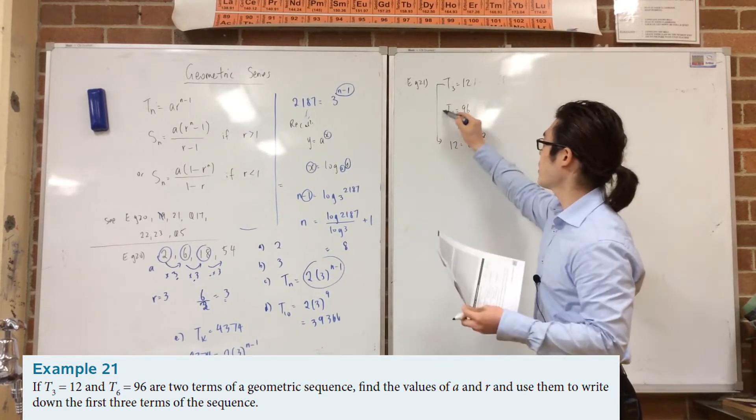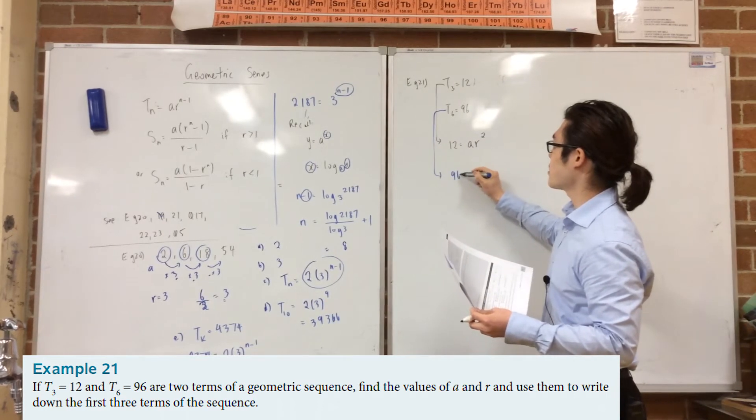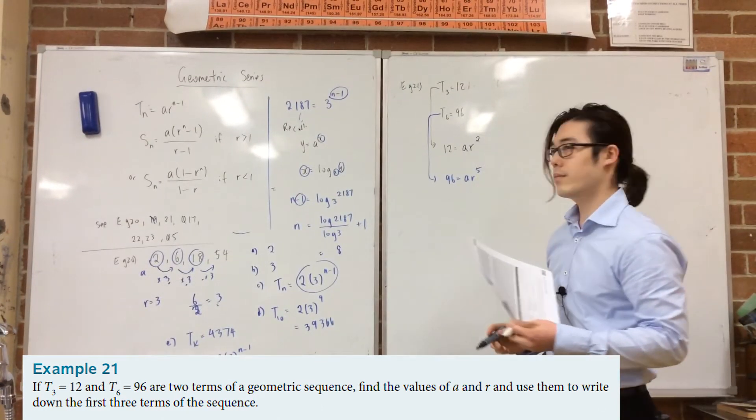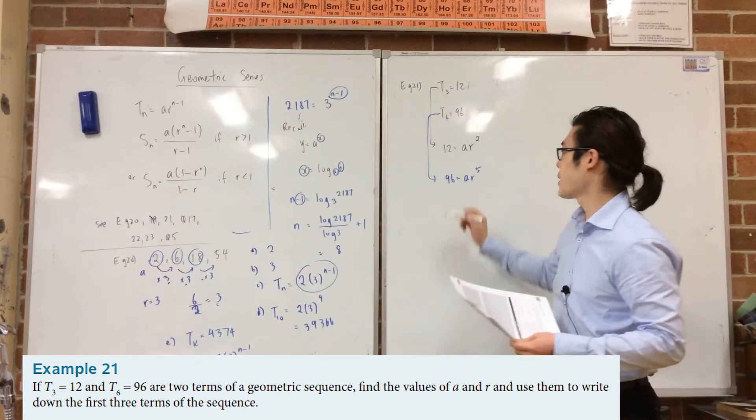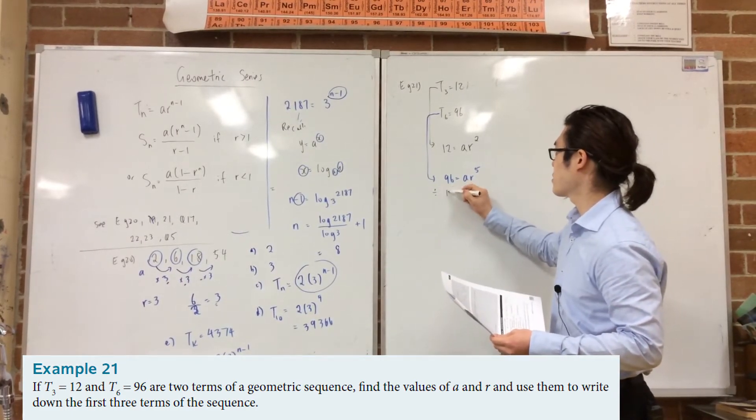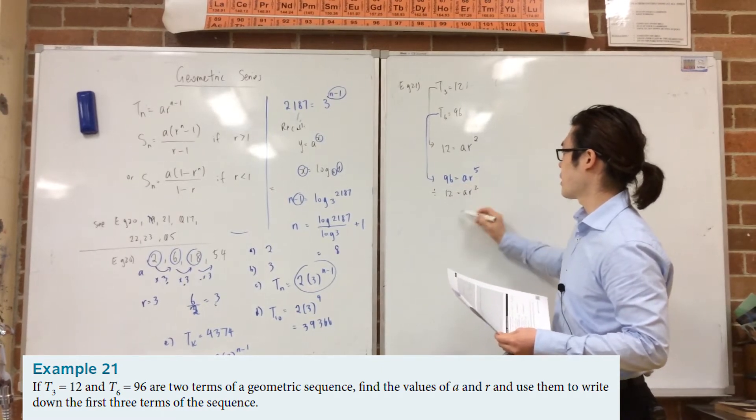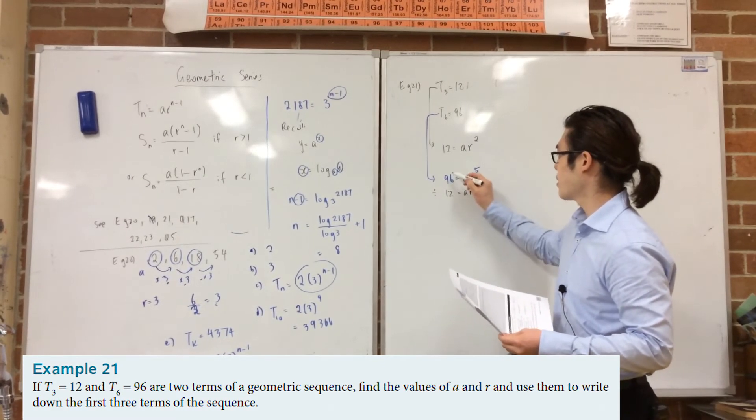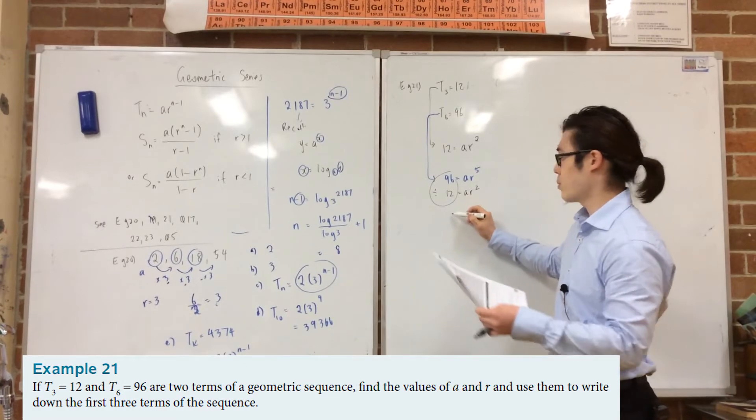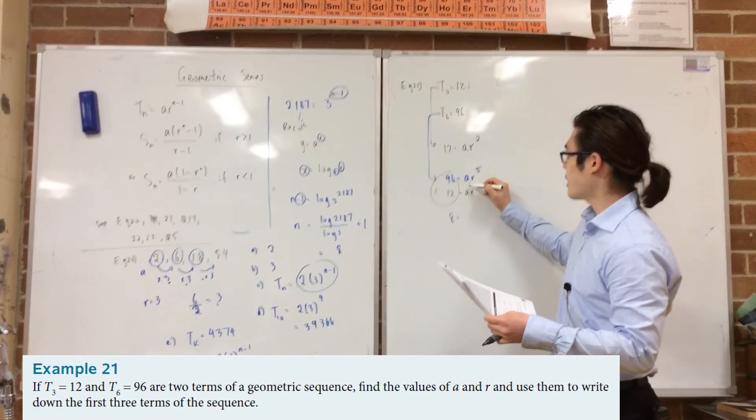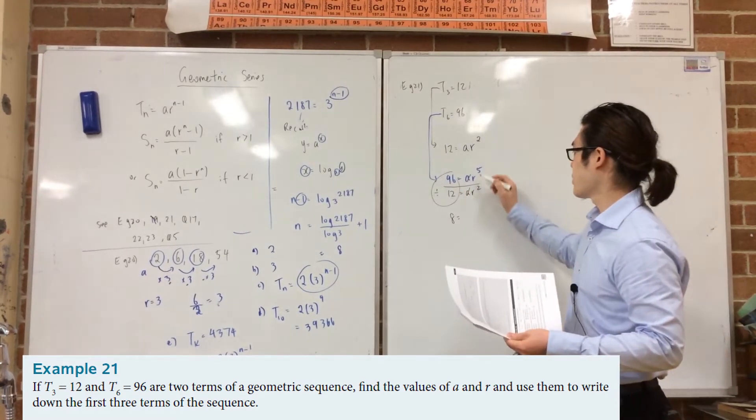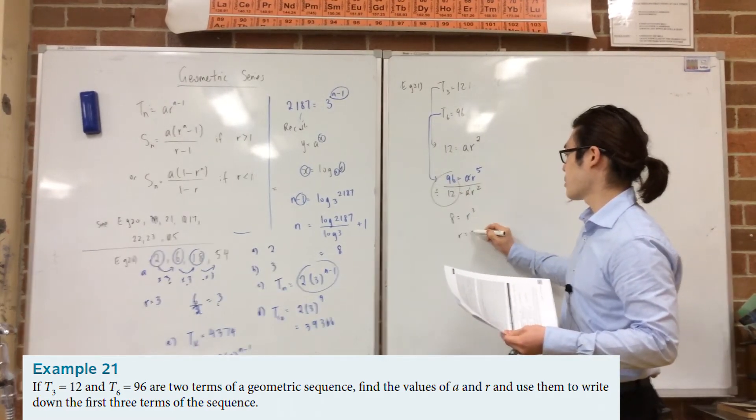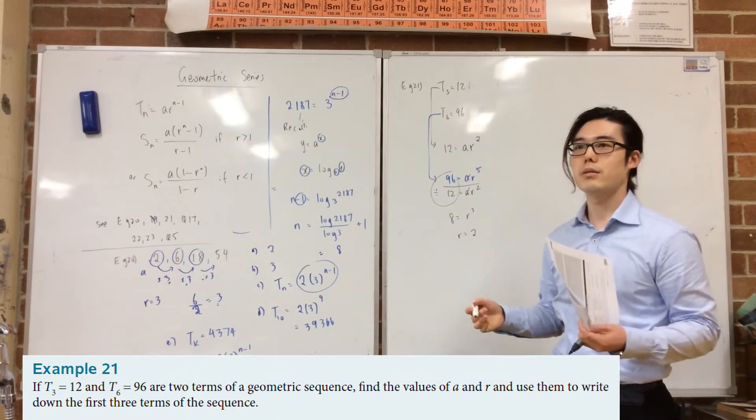So 12 is equal to a we don't know, r we don't know, n minus 1. What's my n minus 1? Two. Whereas from here, we've got 96 is equal to a r to the 5. And then what you want to do is you want to divide those two. But I prefer if I divide it like this. So if I divide, basically, that part, what's 96 divided by 12? That's 8. And this becomes r to the 3. So r is equal to cube root of 8, which is 2.